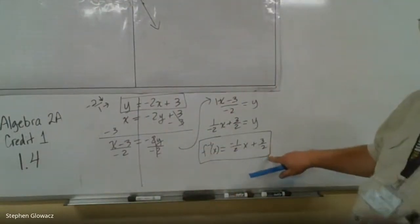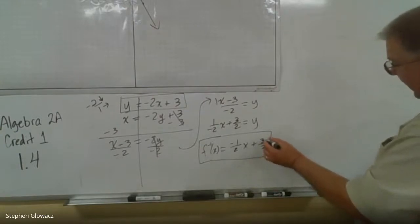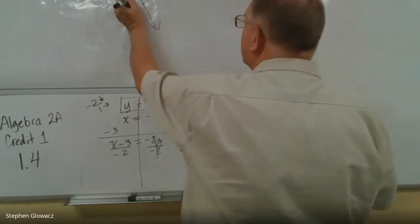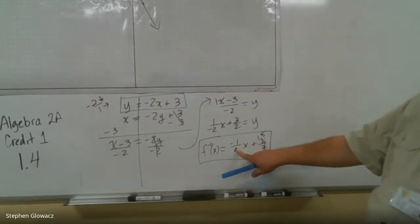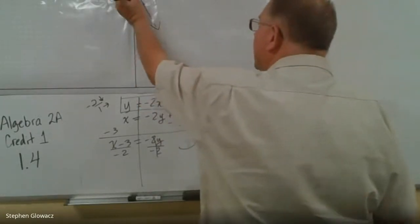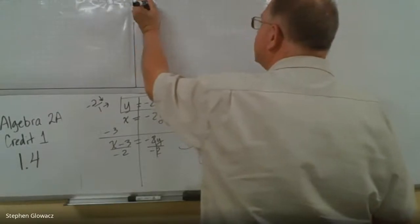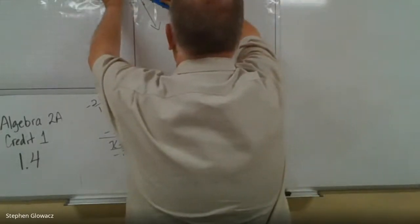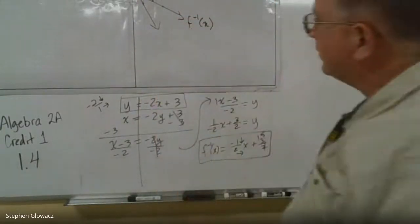Now let's graph the inverse. For f⁻¹(x) = (-1/2)x + (3/2): the y-intercept is 3/2, which equals 1.5, so we place a point between 1 and 2 on the y-axis. The slope is -1/2, so we go down 1 and right 2. We repeat that a couple of times and connect those points to get an accurate line. That's our inverse function.